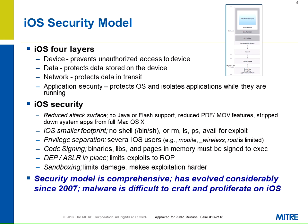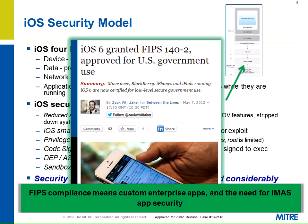Their model is definitely comprehensive and it has evolved. Recently, iOS 6 was granted FIPS 140-2 compliance for approved government use. This means that more and more government agencies are likely going to be building custom apps now that they have this FIPS approval, which also means there's more need for iOS application security and, in particular, IMAS.